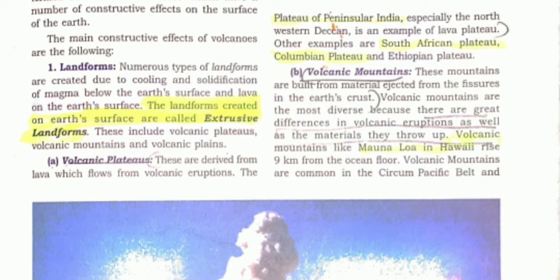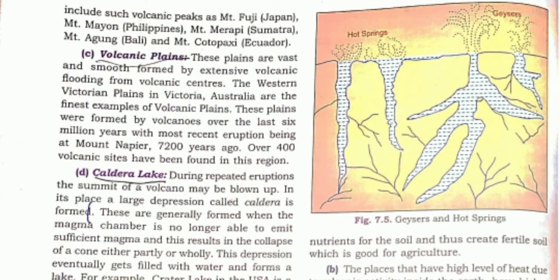Volcanic mountains are formed from materials ejected from fissures in the Earth's crust. For example, Mount Kilauea in Hawaii and the famous Mount Fuji in Japan. Next are volcanic plains, which are vast and smooth, formed by extensive volcanic flooding from volcanic centers. For example, the western Victorian plains in Victoria, Australia, are a fine example of volcanic plains.